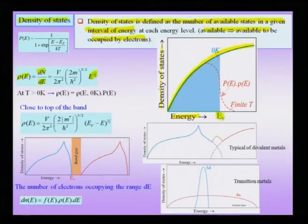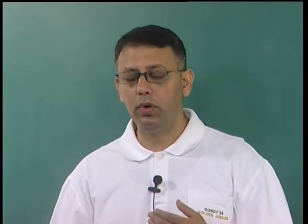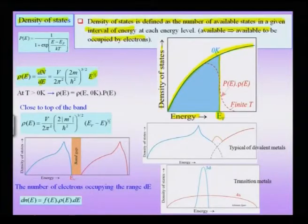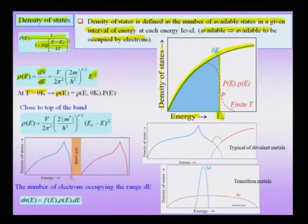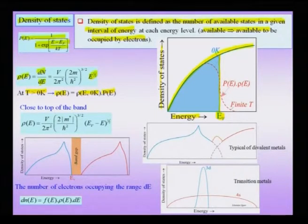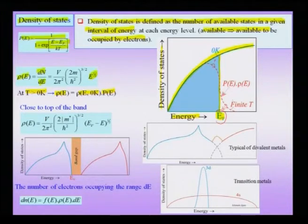At 0 Kelvin, energy levels only up to the Fermi level are filled. All energy levels below E_F are occupied — given by the blue region in the plot — and all levels above E_F are vacant. When we want to track the number of energy levels at any finite Kelvin temperature, we multiply by the Fermi-Dirac function. Therefore, at T > 0 Kelvin, the density of states is the 0 Kelvin density of states multiplied by the Fermi-Dirac function P(E). The function close to E_F develops a curved region — there will be electron states which become vacant below E_F and electron levels occupied above E_F.